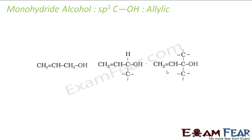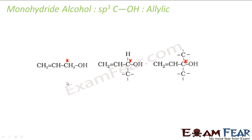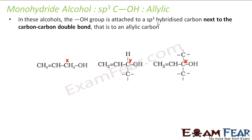Primary, secondary and tertiary alcohols are generally liquid. Then we have allylic alcohol. In allylic alcohol, all the star carbons — the carbon attached to OH — are attached to a carbon that is double-bonded. Please note: the star carbon itself is not double-bonded; the star carbon is attached to a carbon that is double-bonded. That is called an allylic carbon.